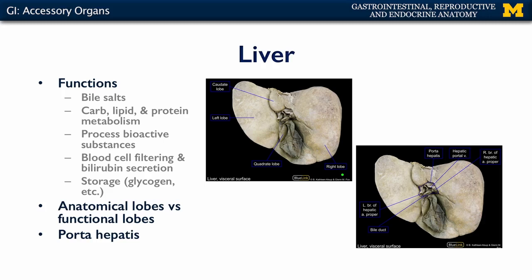Here we're looking at the visceral surface, which is the inferior surface of the liver. The other surface would be the diaphragmatic or the superior surface of the liver. That visceral surface allows us to get a good look at the anatomical lobes of the liver. Anatomically there are four lobes of the liver. There are two major lobes: the right lobe and the left lobe, as well as a more posteriorly oriented caudate lobe and a more anteriorly oriented quadrate lobe.